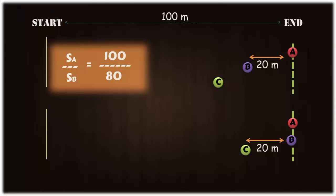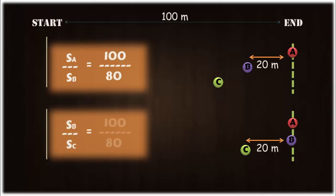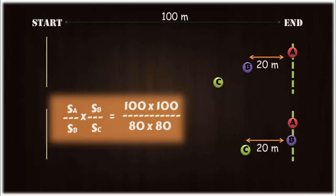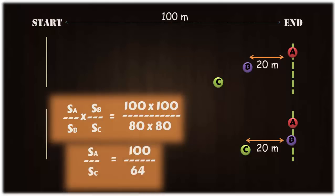Similarly, when B completes 100 meters, C completes 80 meters. So the ratio of speeds of B and C is 100 divided by 80. Now simply multiply these two ratios to cancel out the speed of B, so we get the ratio of speed of A to speed of C equal to 100 divided by 64.